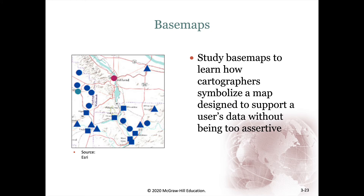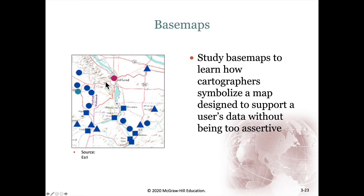One good thing to do if you're trying to figure out what to bring into the visual front of your map and what to fade into the background — the foreground and the background — is to look at other maps and see how they did it. For example, here Portland stands out with a red circle and also has a much larger font. We can also see variations in the thicknesses of the roads. There's a little bit of relief shading or hill shading here to give an idea of where the hills are in this area, but it's really kind of faded off into the background — it's not the most important part of this map.